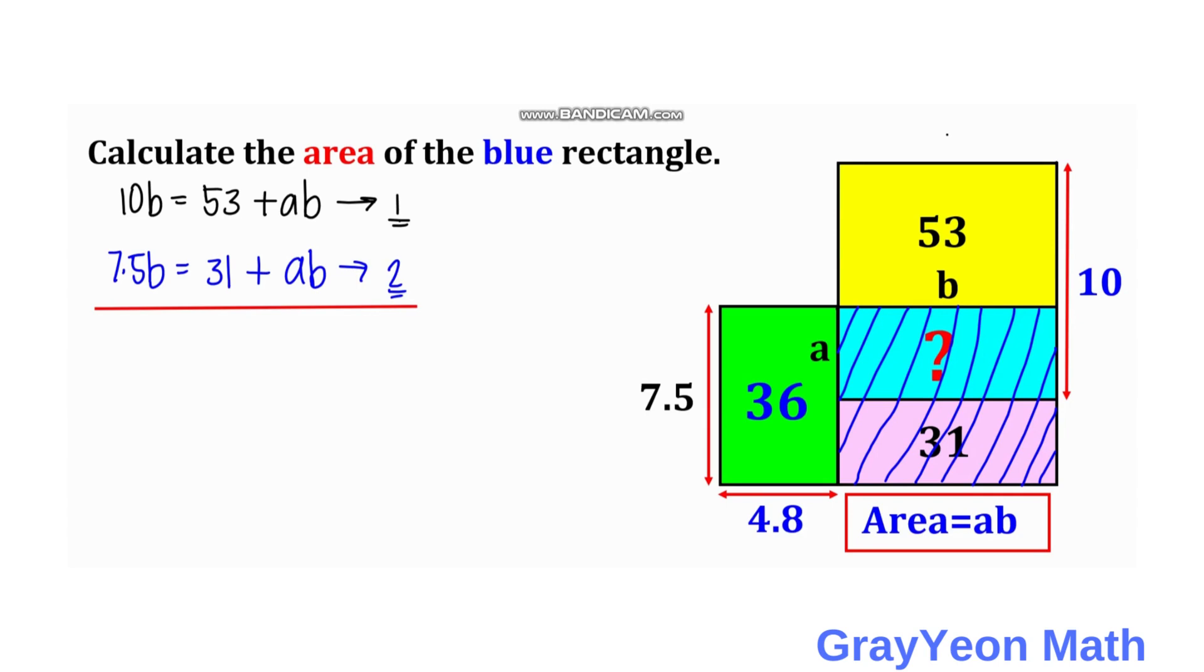Next is we subtract this second equation from the first equation. So we have 10B minus 7.5B. That will be 2.5B. And 53 minus 31 is 22. And this cancels out. This becomes AB minus AB. It is 0.